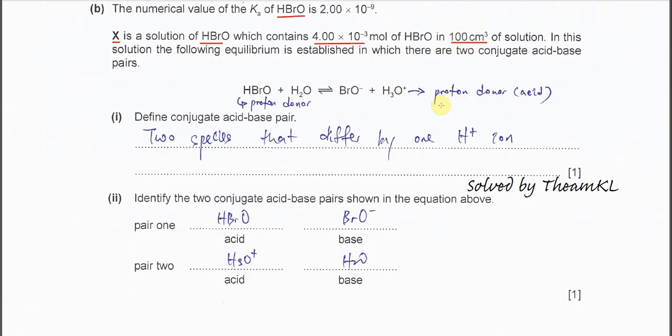Part 1: define conjugate acid-base pair — this is something you learned in AS, so recall it. A conjugate acid-base pair: first you need to know which species is a proton donor and which is a proton acceptor.